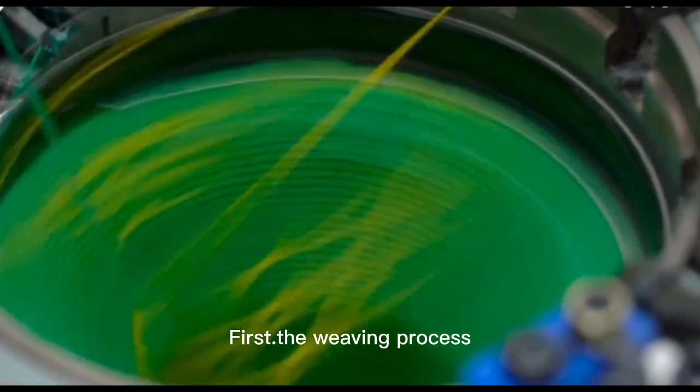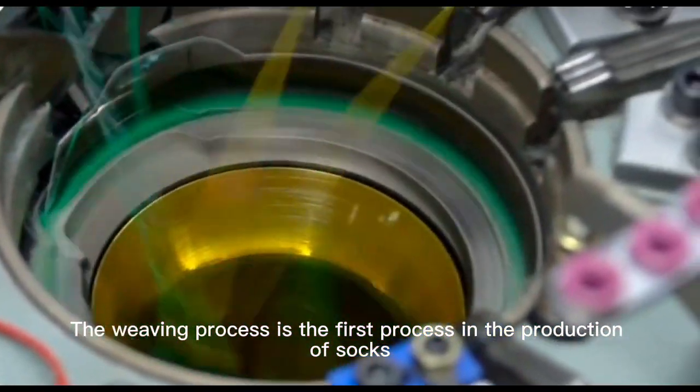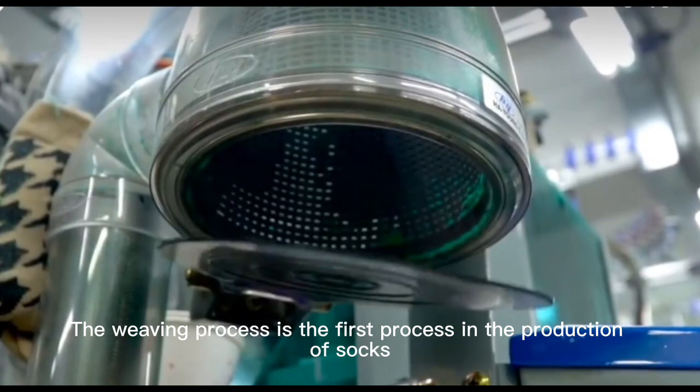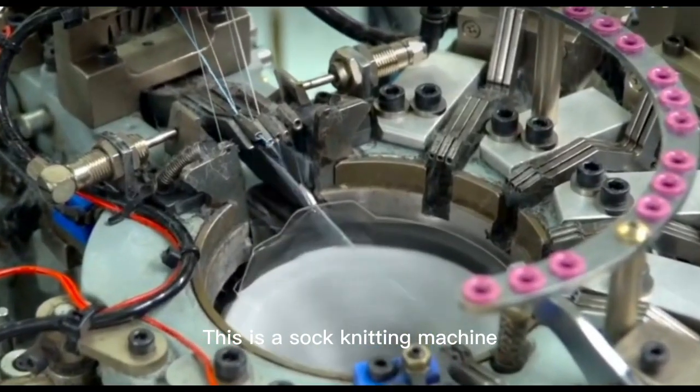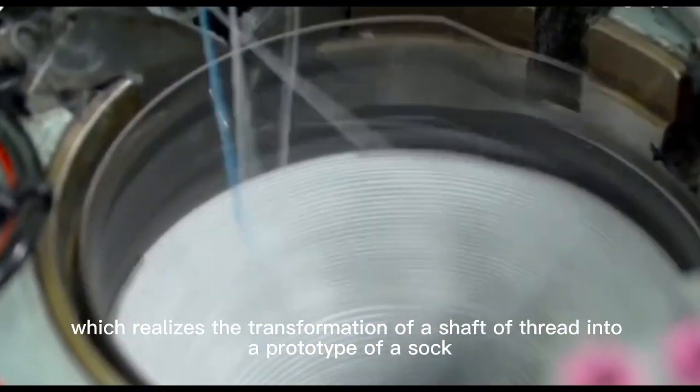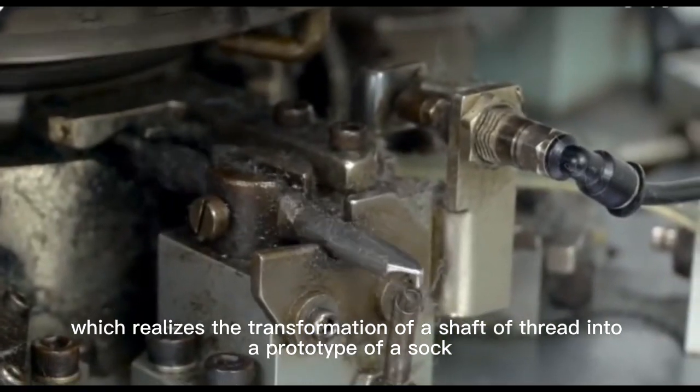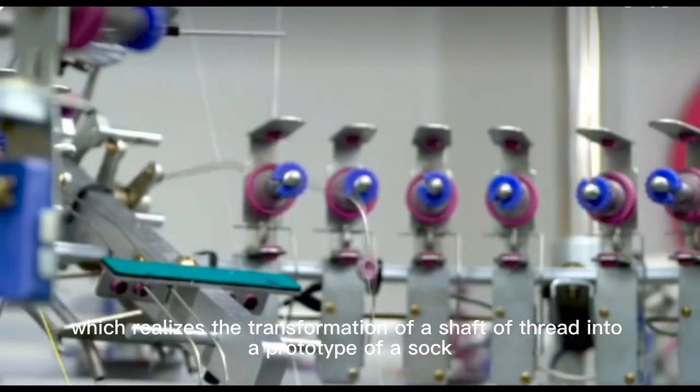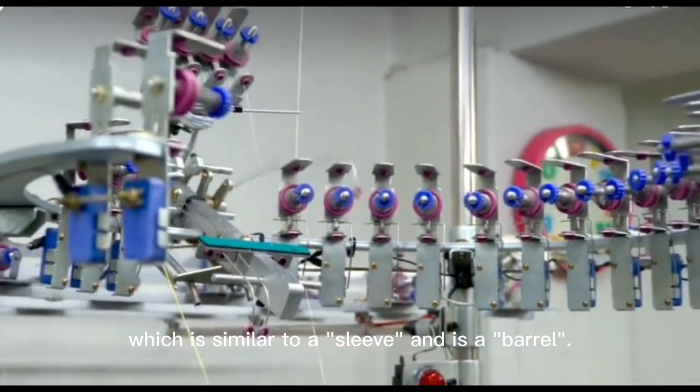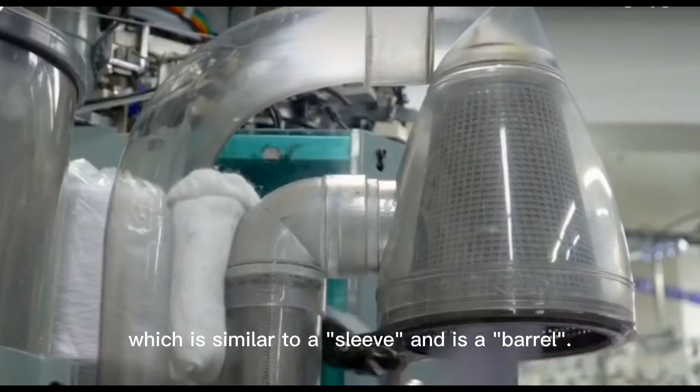First, the weaving process. The weaving process is the first process in the production of socks. This is a sock knitting machine, which realizes the transformation of a shaft of thread into a prototype of a sock, which is similar to a sleeve and is a barrel.